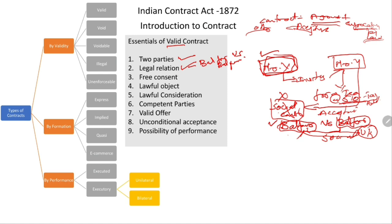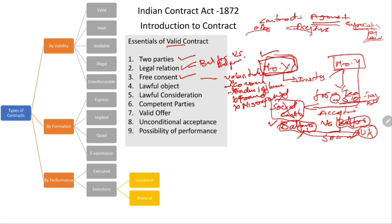Another essential of valid contract is free consent. Free consent means both parties voluntarily give their consent — there should not be any coercion, any undue influence (such as a teacher pressuring a student), any fraud, any misrepresentation of facts, or any mistake. Free consent means both parties have to give acceptance without any threat, coercion, undue influence, fraud, misrepresentation, or mistake.